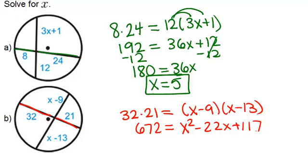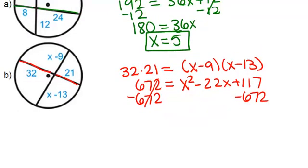So this is a quadratic equation that we're going to have to solve. And in order to solve a quadratic equation, remember the first thing you want to do is have it equal to 0. So we'll minus 672 from both sides in order to have our equation equal to 0. So we have 0 equals X squared minus 22X minus 555.